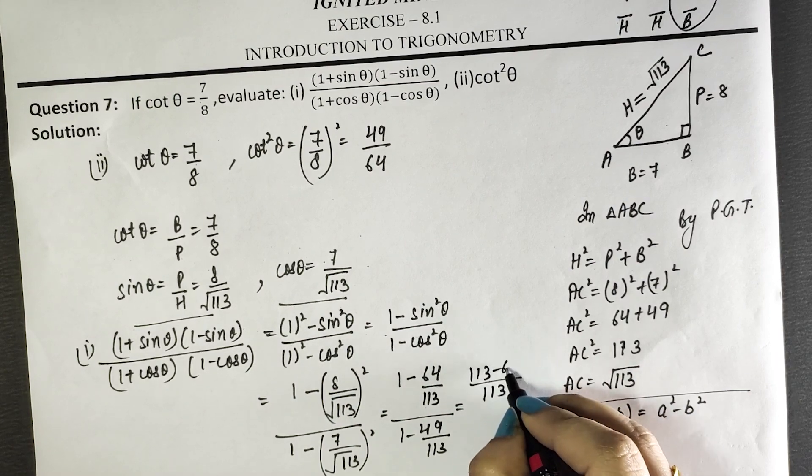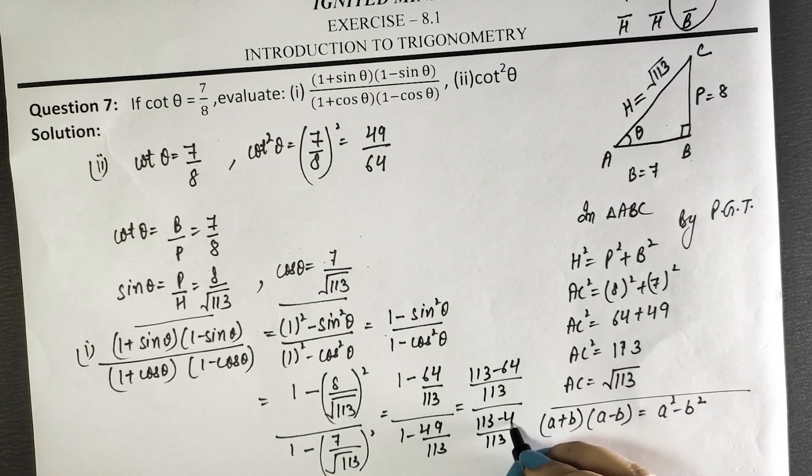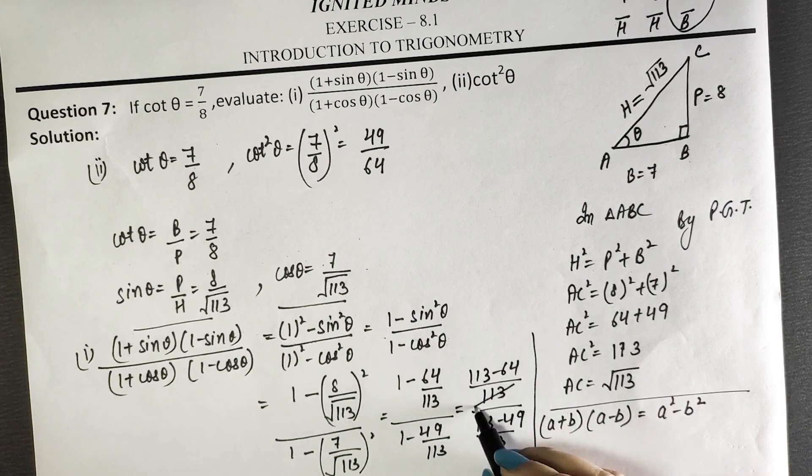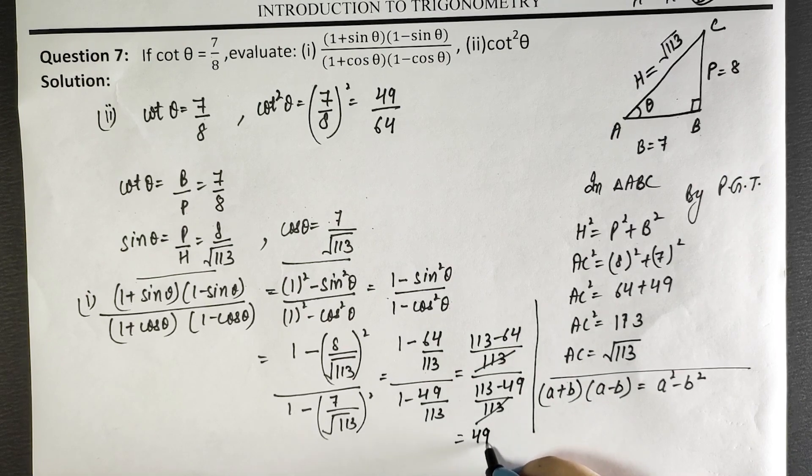Taking the LCM: 113 minus 64 divided by 113 minus 49. The 113s will cancel. You will have 49 in the numerator and 64 in the denominator.